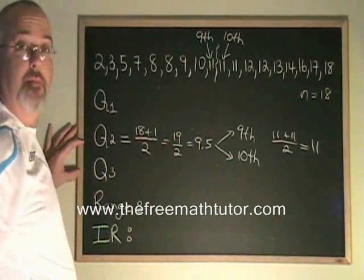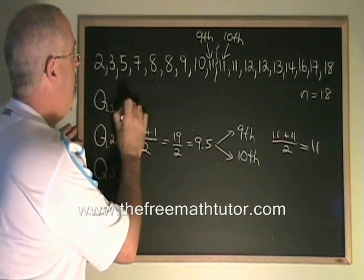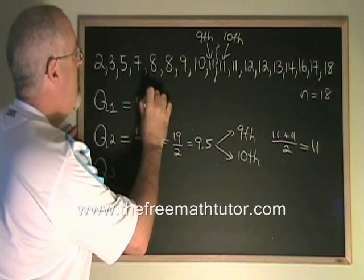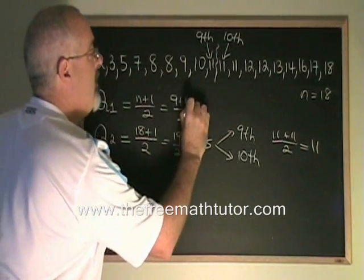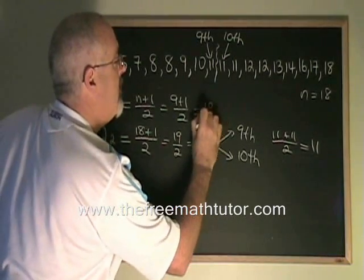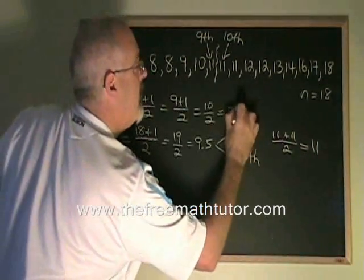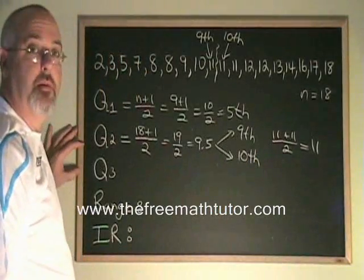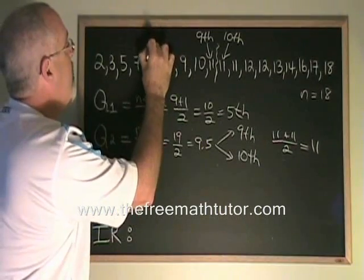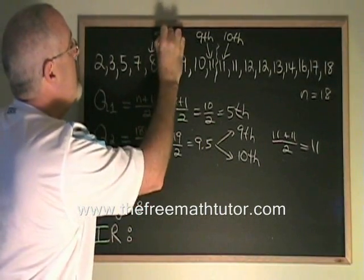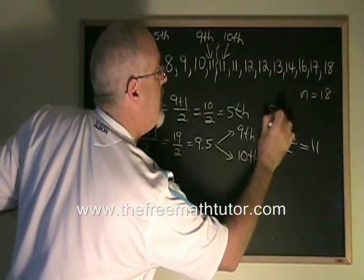Our n plus 1 over 2 formula gives us 9 plus 1 over 2, which gives us 10 over 2, 5. The fifth data value is going to be our Q1, 1, 2, 3, 4, 5. Our fifth data value is here. It's this 8. So our Q1 is 8.